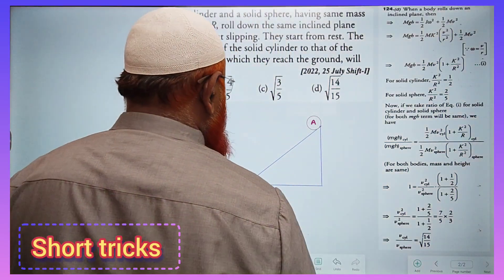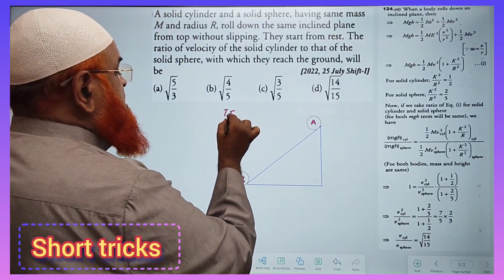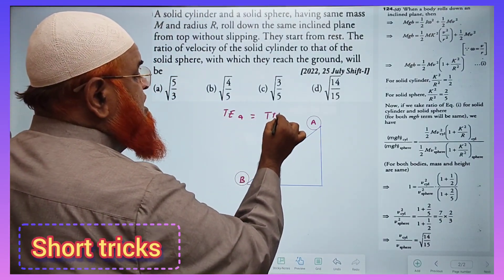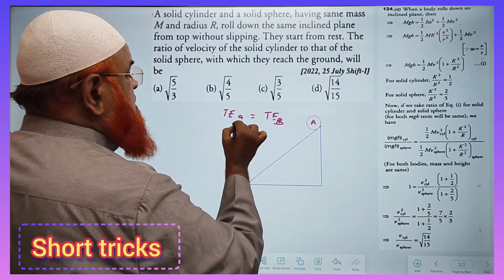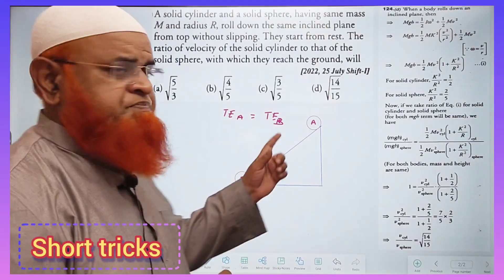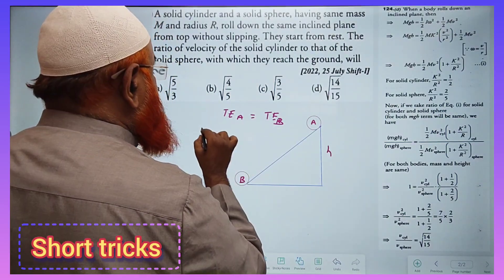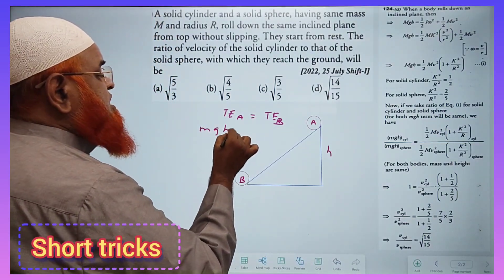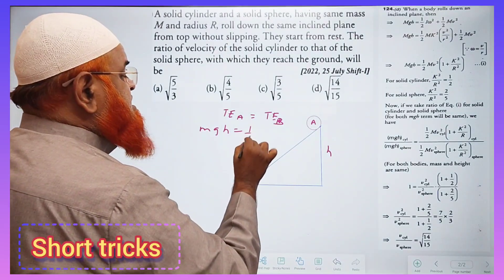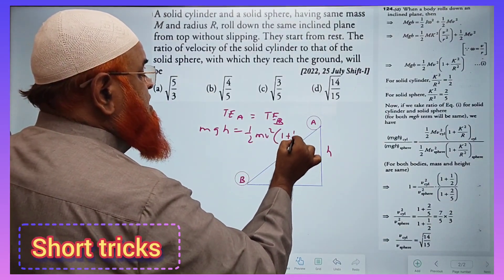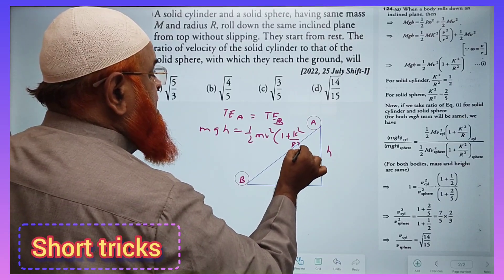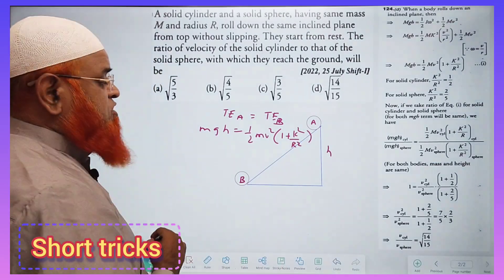So here if you consider conservation of energy, total energy at A is going to become total energy at B here. Okay, so you know at this place as there is height h, total energy at A is going to be mgh and at this place there is nothing but half mv² (1 plus k²/r²). Okay so this is going to be the formula.